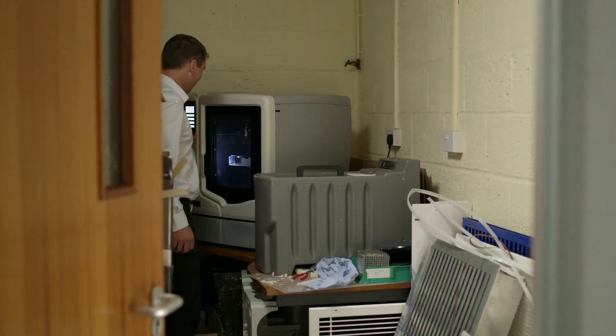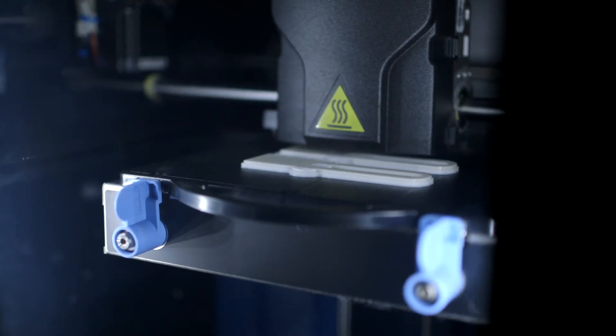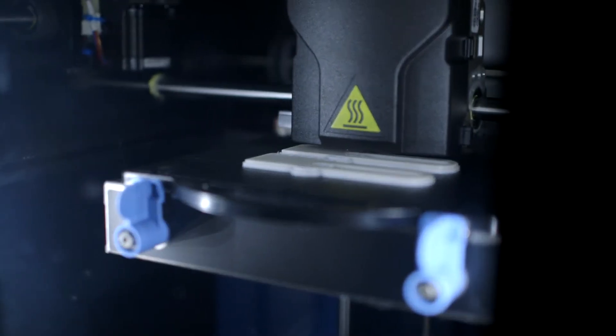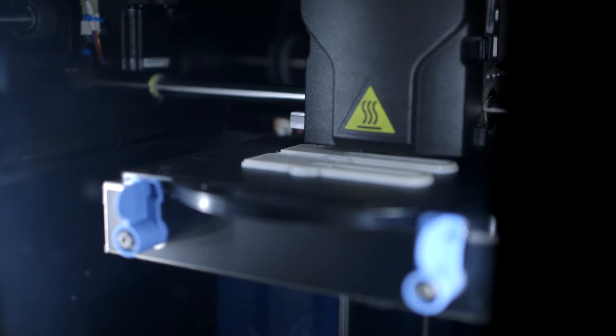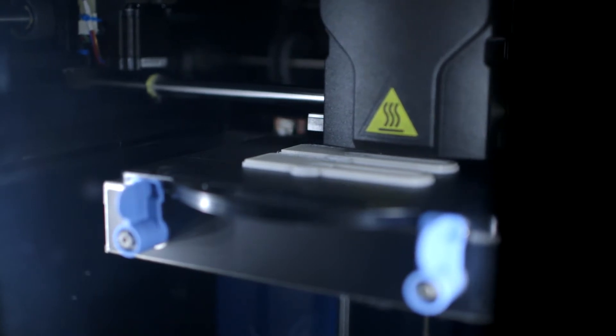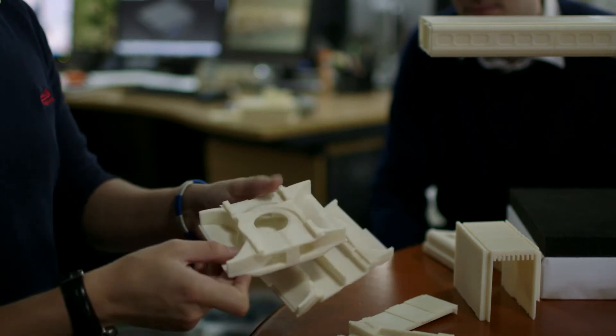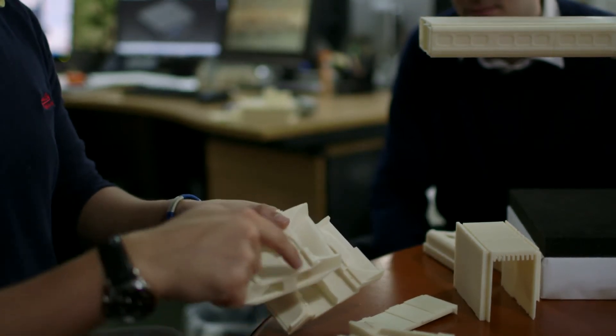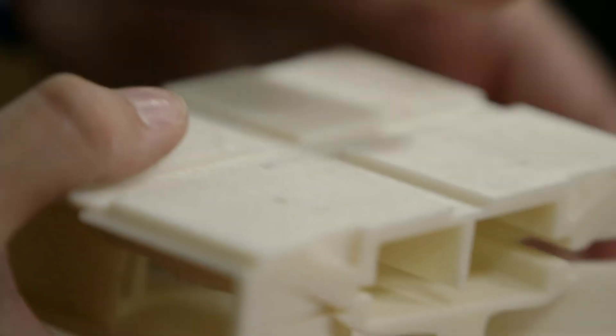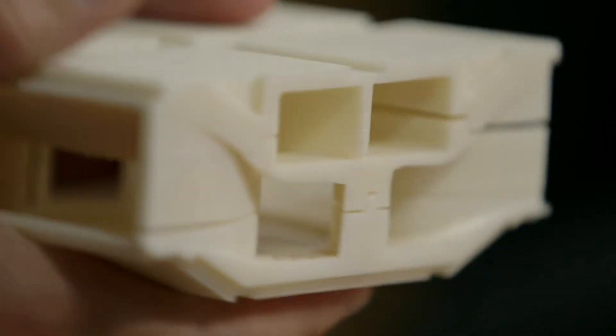The R&D team use all the latest design tools in terms of software but they also have a 3D printer which they make use of on a regular basis and that was particularly important when it came to understanding the modular configuration of the new Coolphase Nova system. Using the 3D printer we could print out scale prototypes of the different modular components of Coolphase which enabled our engineers to really understand exactly how the system would piece together for installation.